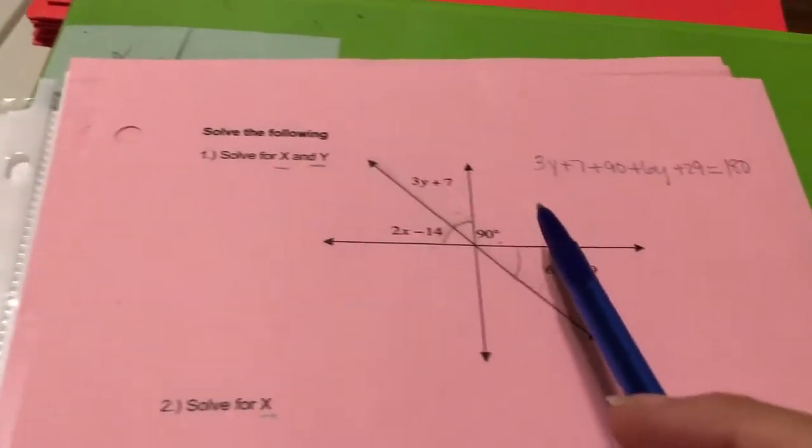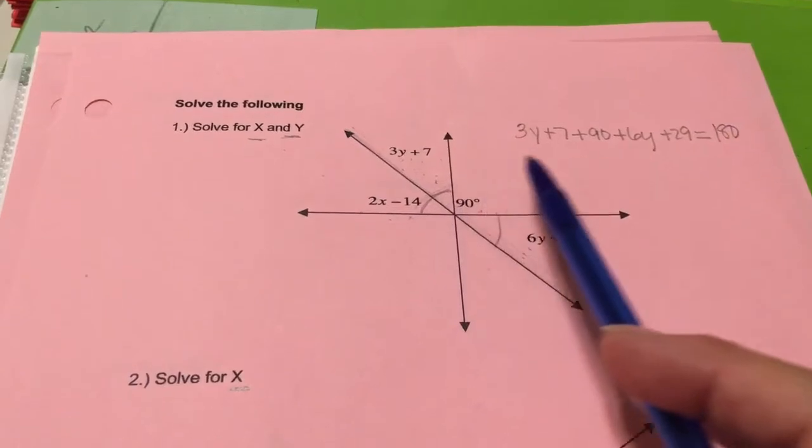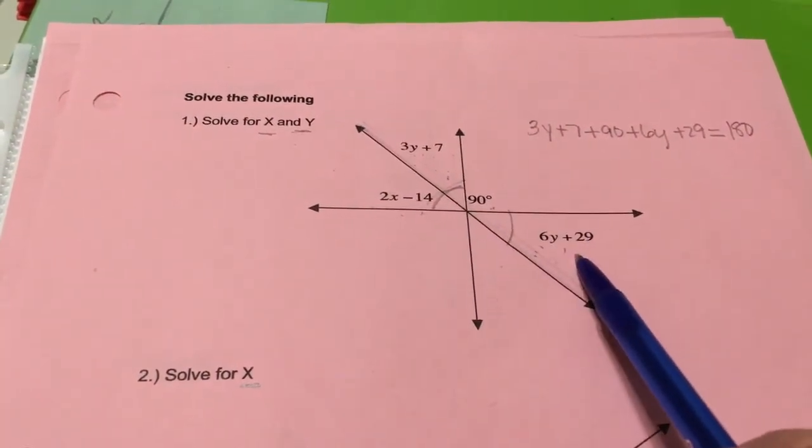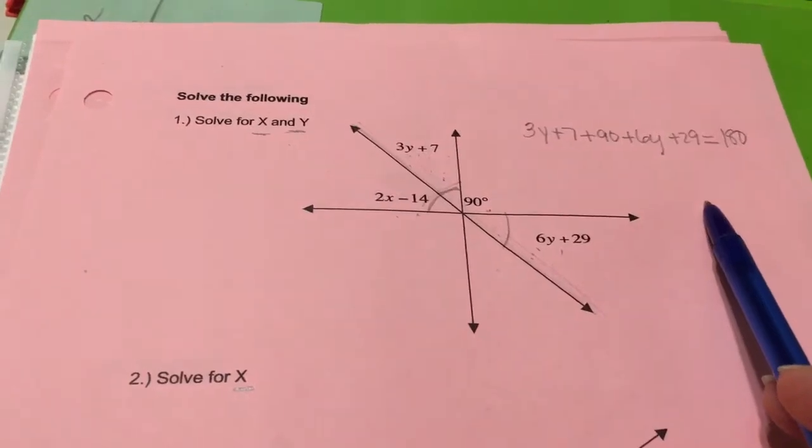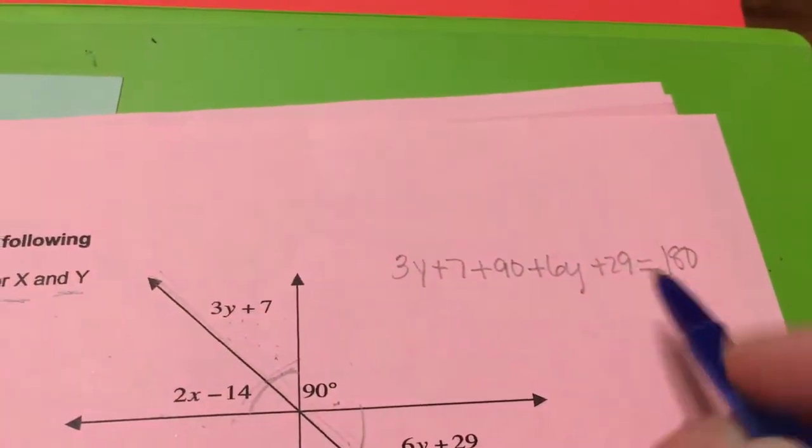Okay, so the new equation you use is 3y plus 7 plus 90 plus 6y plus 29 equals 180. Now I'm going to put a couple like terms together to make up for my mistake.